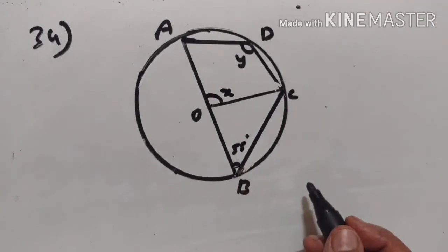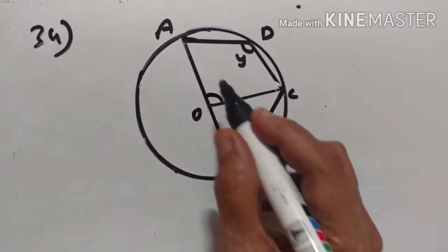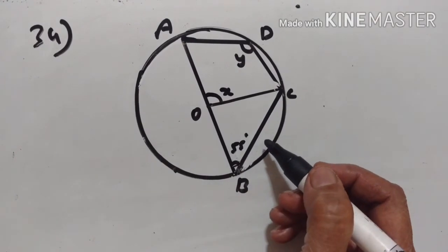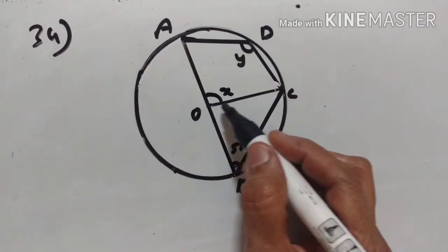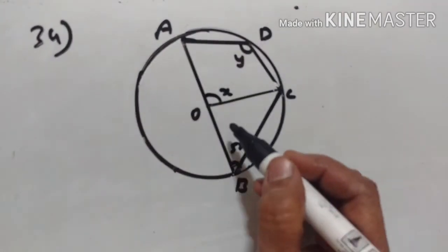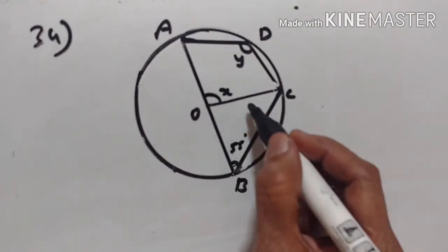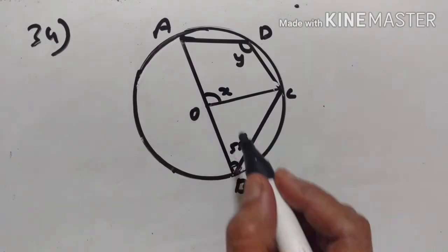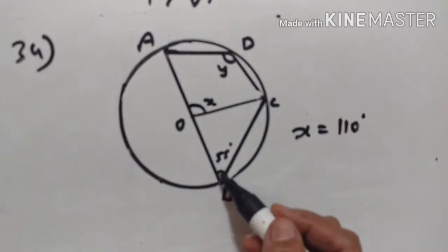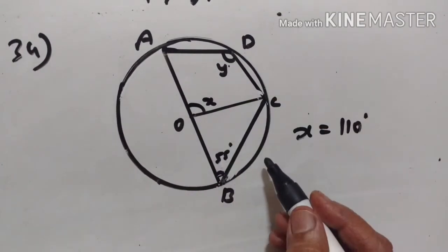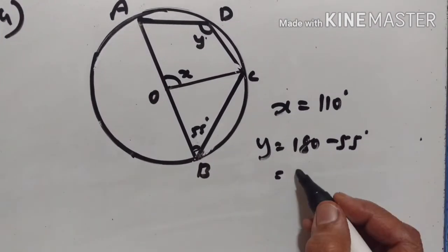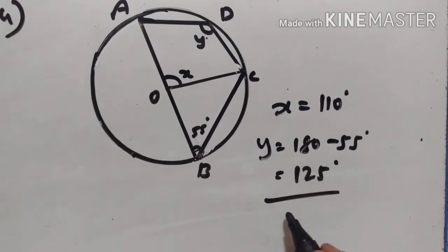Problem number 34. In this figure, O is the center of the circle and angle ABC equals 55 degrees. Calculate the values of x and y. Arc AC subtends angle AOC at the center and angle ABC on the circumference. Therefore, angle AOC equals twice angle ABC, which is 2 times 55, giving x equals 110 degrees. Now, ADCB is a cyclic quadrilateral, so opposite angles are supplementary. Therefore, y equals 180 minus 55, which is 125 degrees.